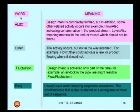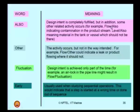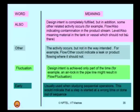Let us see some more secondary keyword examples. Consider 'also' — the design intent is completely fulfilled, but in addition some other related activity also occurs. For example, 'flow also' indicates contamination in a specific product stream. Another example is 'level also,' meaning material is present in the tank or vessel which should not be there — a level showing a higher threshold value which is not desirable. This 'also' keyword can indicate the deviation from the design intent.